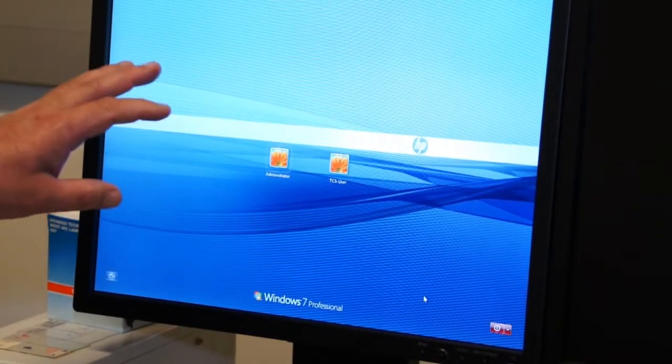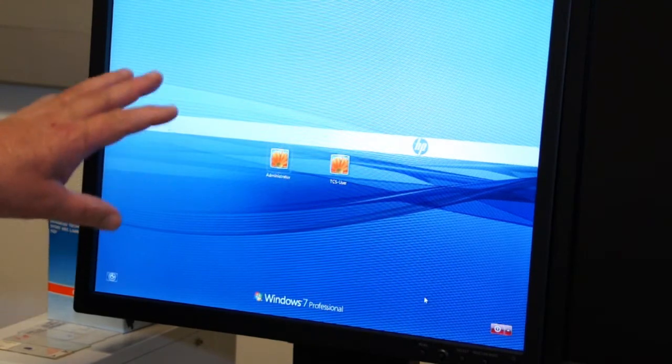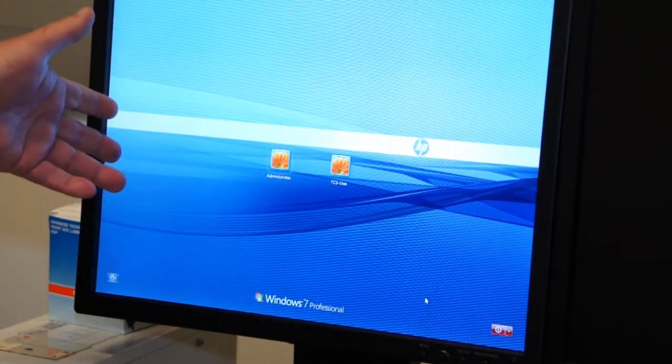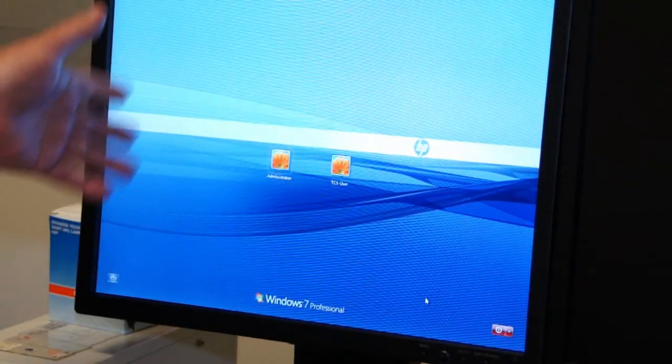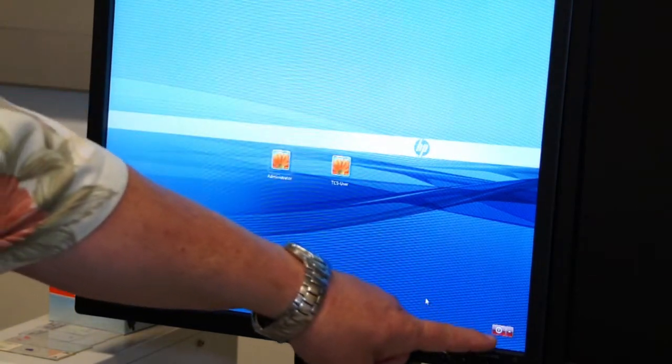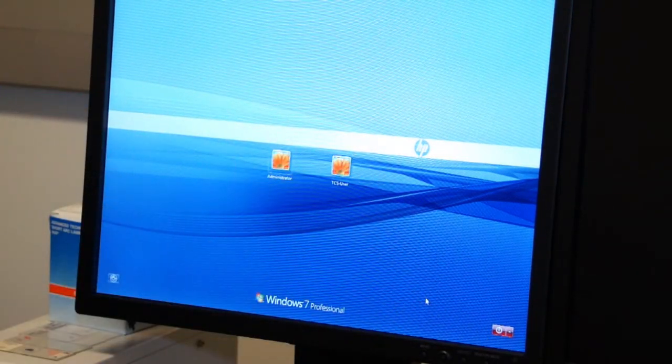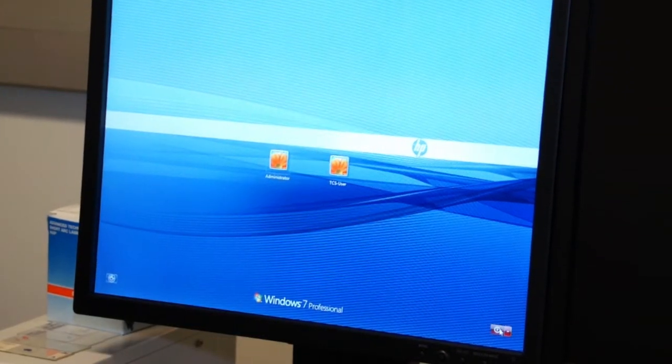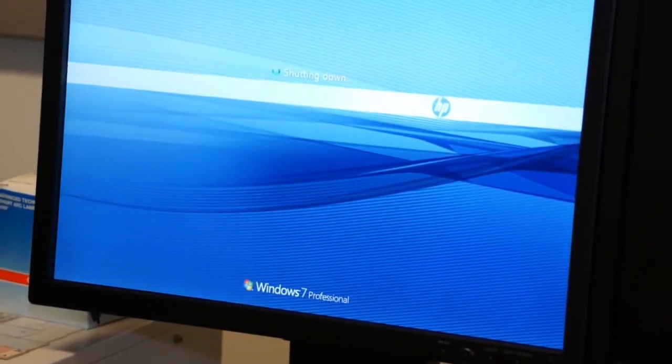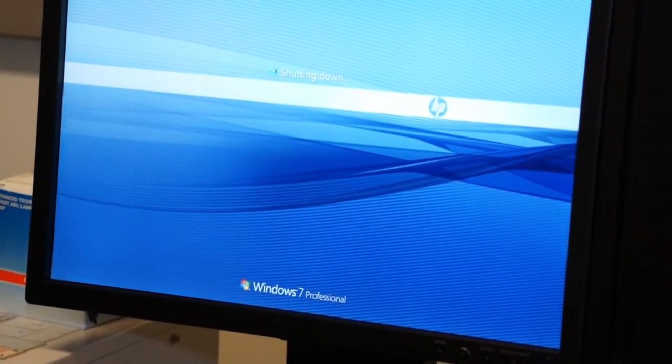Because the main power to the system also turns on the computer, Windows starts by itself. Therefore in shutdown you must first close Windows before you can turn off the power to the system. So we close Windows and we wait until Windows shuts down completely.